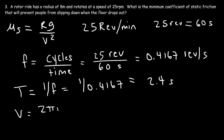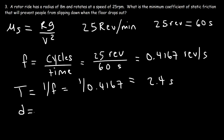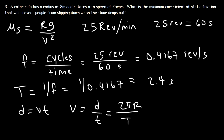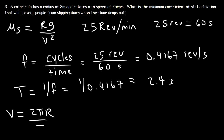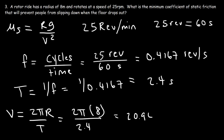The speed is 2πr divided by the period — it's distance over time, and the distance around a circle is the circumference 2πr. We can derive this from d = vt, so v = d/t, where d = 2πr and t is the period. So v equals 2π times 8 meters divided by 2.4 seconds, giving 20.94 meters per second.